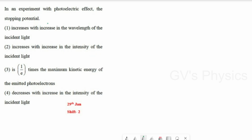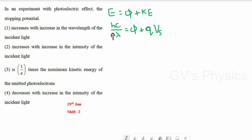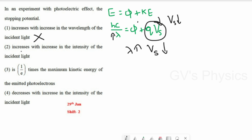Next question: in an experiment with the photoelectric effect, the stopping potential — find the correct statement. Option 1 says it increases with increase in wavelength of incident light. Using hc/λ = work function + KE, if wavelength increases energy decreases, so kinetic energy and stopping potential also decrease. Option 1 is incorrect. Option 2 says stopping potential increases with increase in intensity — this is also incorrect, since stopping potential is independent of intensity and depends only on frequency.